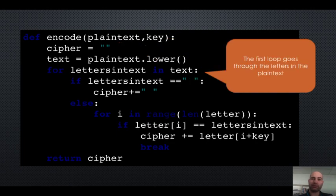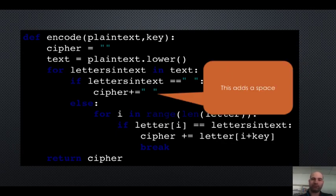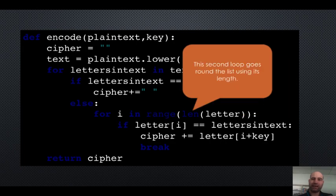The first loop goes through the letters in the plain text. And then we check for spaces. And then we go and add the space. The second loop goes round the list using its length.